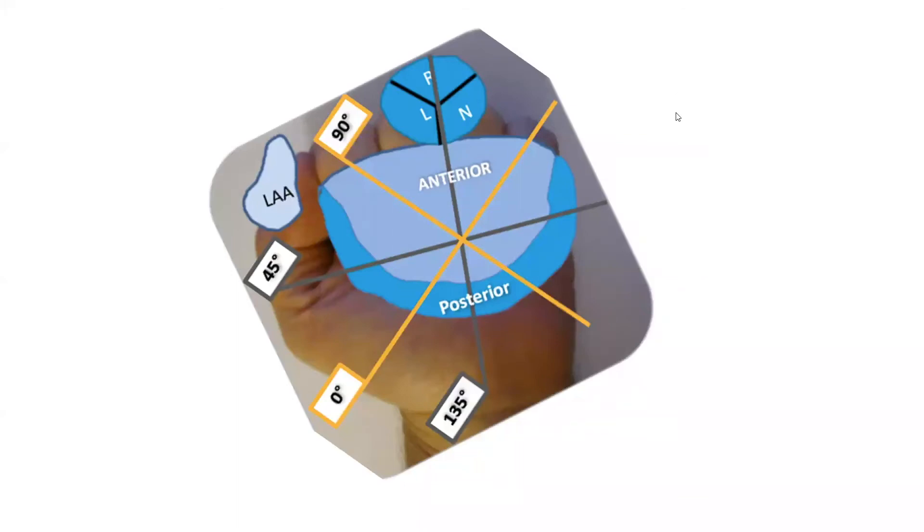Being able to figure out where the mitral regurgitation pathology is, is literally in the palm of your hand. This is a schematic of a closed-fisted hand with the left atrium being where the thumb is and the anterior-posterior leaflet where the fingers are. Here, the light blue represents the anterior mitral leaflet.